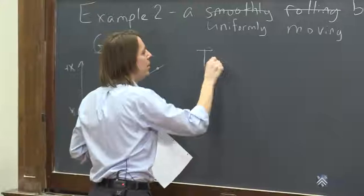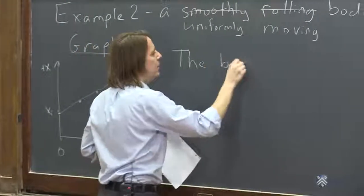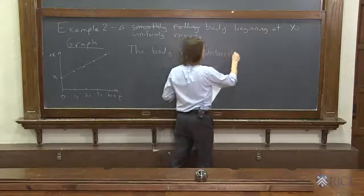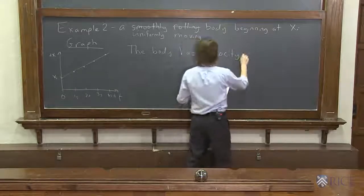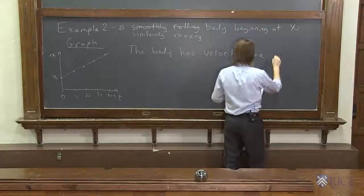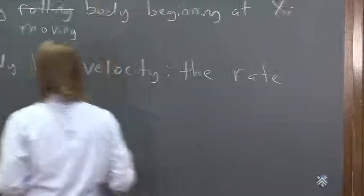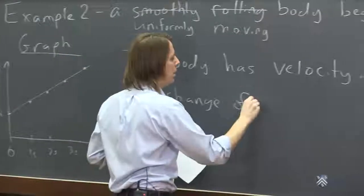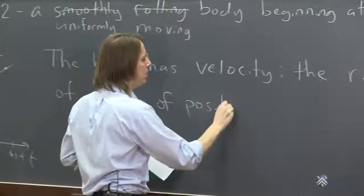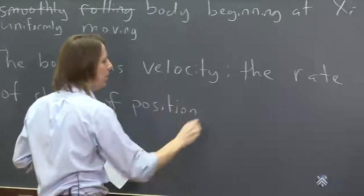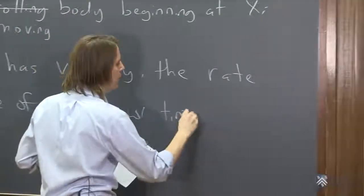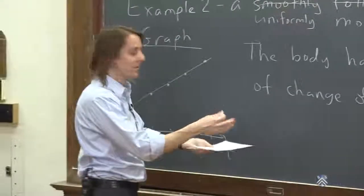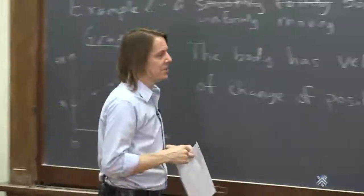So the property we're going to talk about is that the body has velocity. So if we had to define velocity, it is the rate of change of position with time. We're going to talk about several kinds of velocities. But that is the basic idea. It's how fast is the position changing in time.